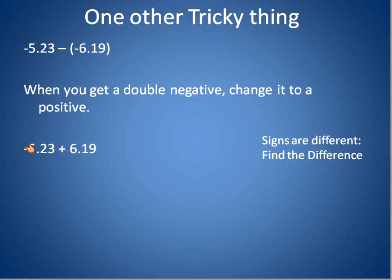Now, I look at this question. I have a positive and a negative. Positive 6.19, negative 5.23. The signs are different. I find the difference. Put the larger number on top, smaller number on the bottom, and I subtract. 9 minus 3 is 6. And then I'm going to borrow from that 6 to make it a 5. 11 minus 2 is 9. 5 minus 5 is 0. So, what I end up with here is 0.96.